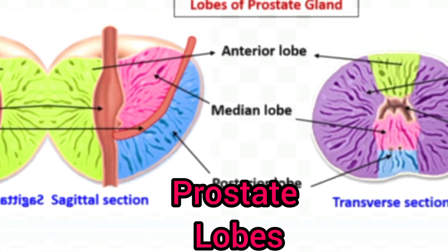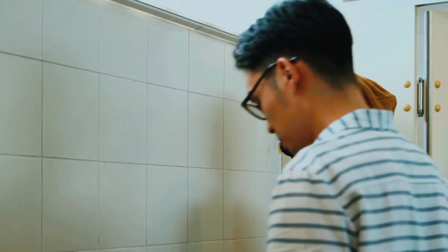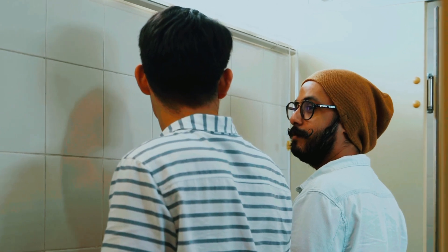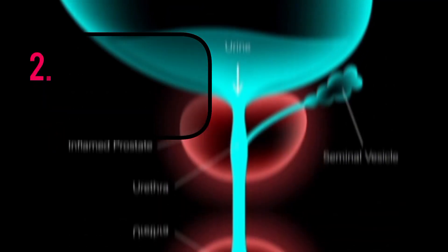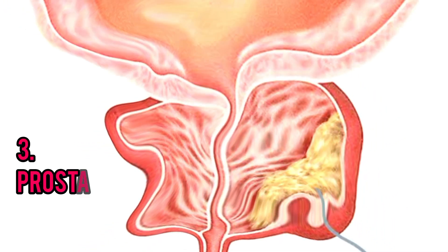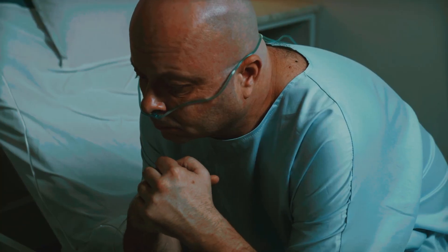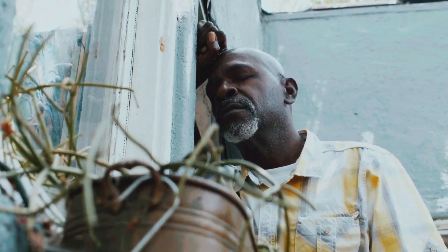It is described in gross anatomy as consisting of lobes and in microscopic anatomy by zones. Common disorders of the prostate gland include enlargement, infection, and cancer. Prostate cancer is one of the most common types of cancer in men and a significant cause of death for elderly men worldwide.